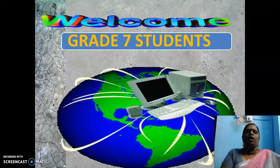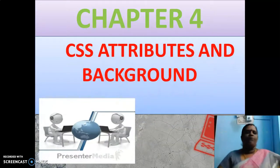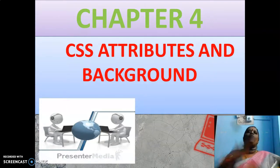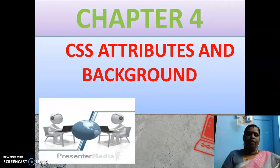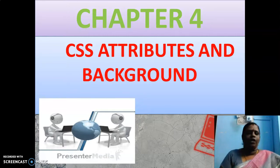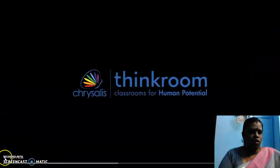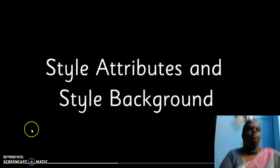So we are going to see Chapter 4 — style attributes and background. Before entering into the book back, we will have a small recap of Chapter 4. Chrysalis has given an AV — audio visual — of the recap of Chapter 4. So let us see that AV and come back to the PPT. This is your AV of style attributes and style background.